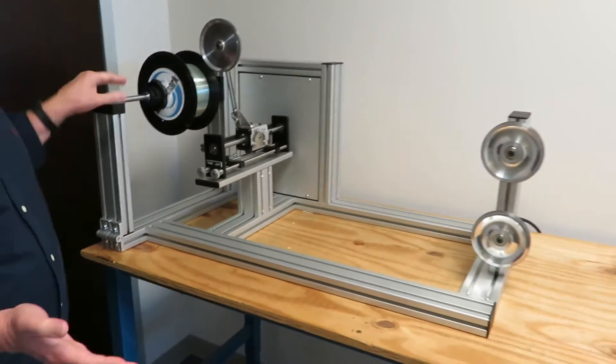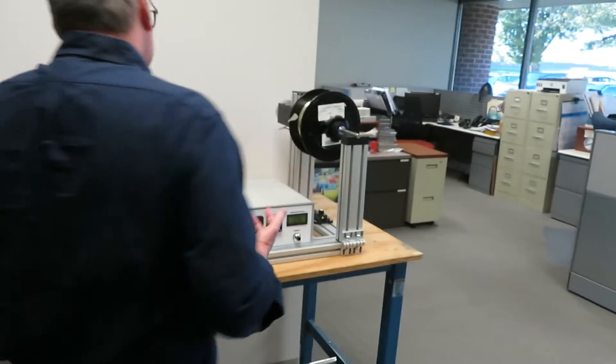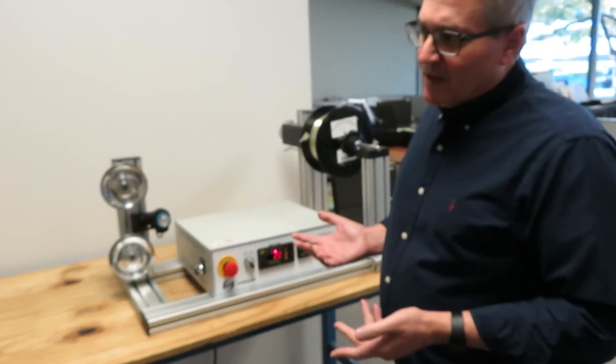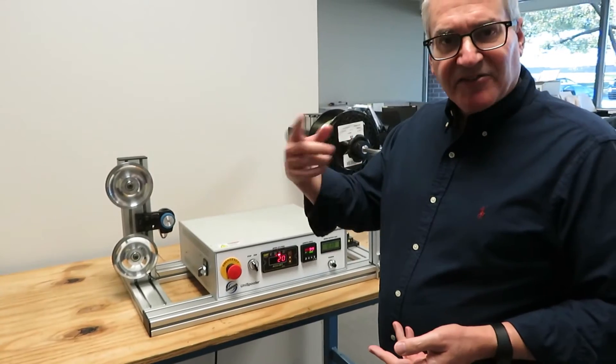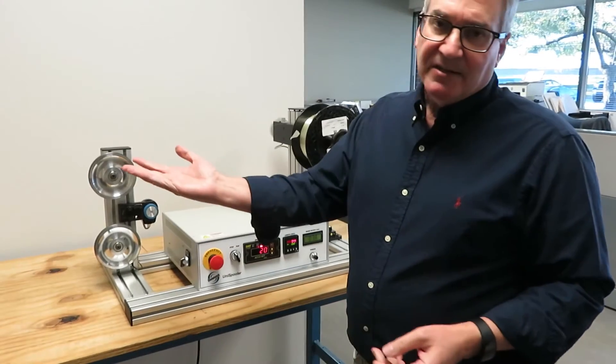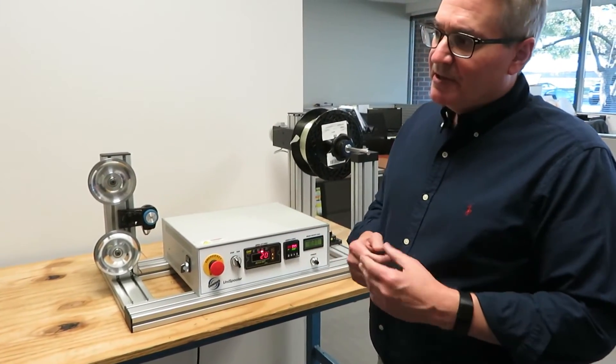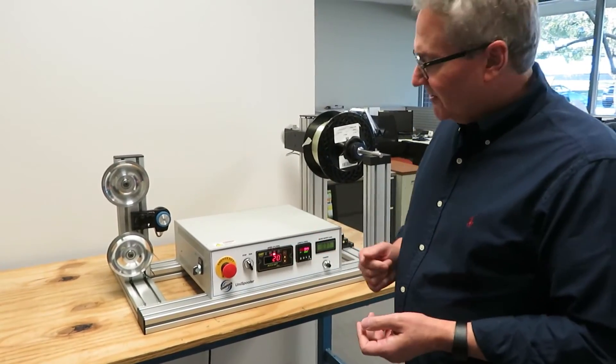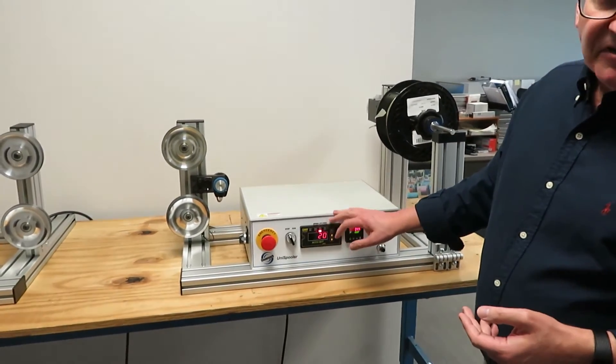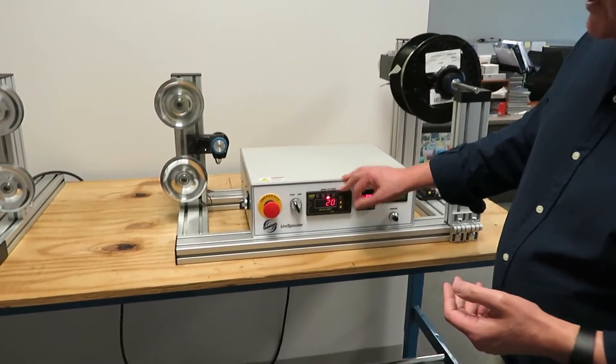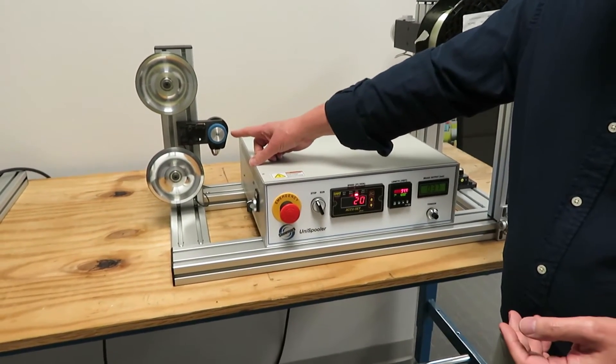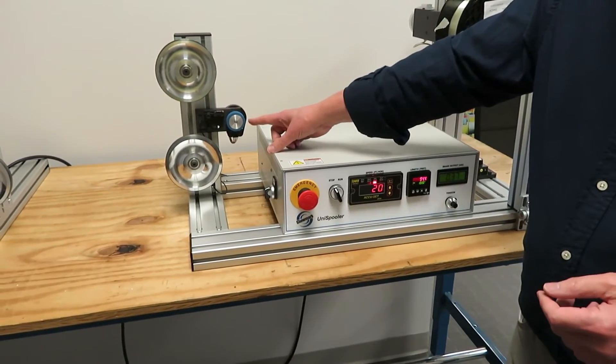So the other unique function of this machine is that normally a standard winder or unispooler turns the take-up motor at a constant RPM. So as that spool builds up, the linear rate of the wire running through it will increase proportionally. This machine uses a closed-loop speed controller that's reading the speed directly off of our high-resolution length tracker. It's converting it into a speed.